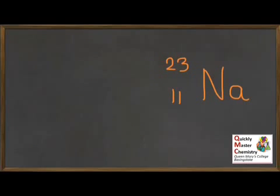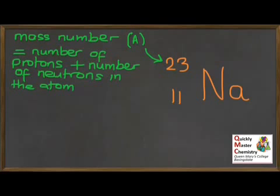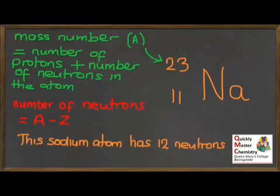The number at the top, which will be the larger of the two numbers, is called the mass number, symbol A — both Z and A are capital letters. The mass number tells us the sum total of the number of protons plus the number of neutrons. This means we can use the two numbers together to work out the number of neutrons: neutrons = mass number minus atomic number. So for sodium, 23 minus 11 tells us there are 12 neutrons present in the atom. An atom can have different numbers of neutrons and still be the same element, as long as it has the same number of protons.